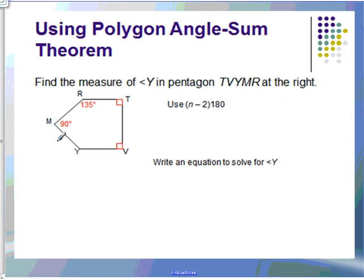Here's another example of how to use this theorem. I'm not going to go into it just for timing's sake, but if you want to try this at home in your notebook, that would be a great idea. It's a little bit of a more challenging question, but I think you'll be able to figure it out. It says, find the measure of angle Y, that's the angle right here, in a pentagon T-V-Y-M-R. Use our (n-2) times 180, and then you want to write an equation to solve for that. Try to figure out this problem. It's a really good problem, and you will have examples like this tomorrow in the work you're doing.